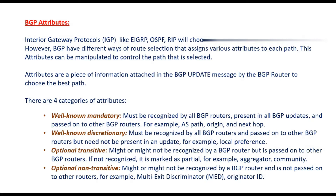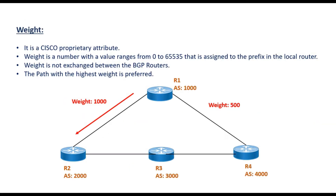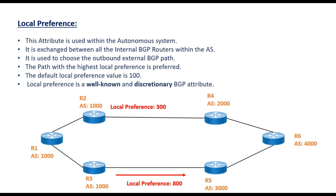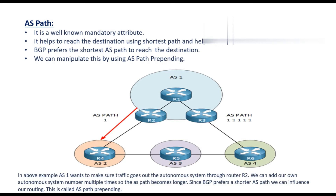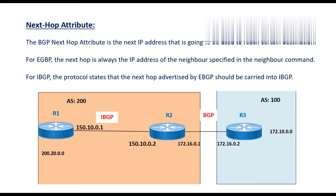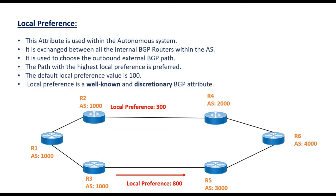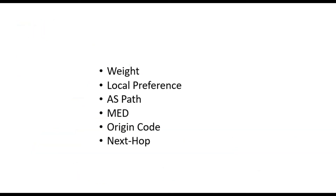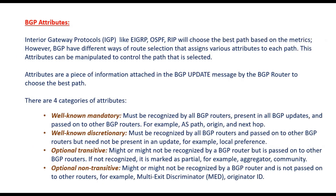In this video, along with examples, let's discuss about the attributes like weight, local preference, AS Path, MED, origin code, next hop, etc. An attribute is a piece of information that's attached in the BGP update message by the BGP router to choose the best path.